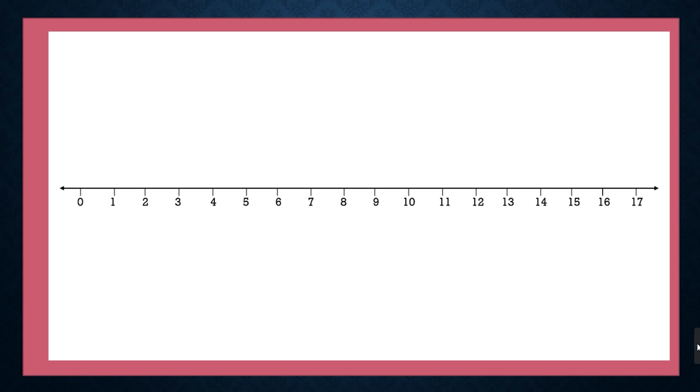Let's take one more example. 3 plus 2 is equal to what? Our character will sit on 3 and jumps 2 times forward and will sit on 5. That means 3 plus 2 is equal to 5.